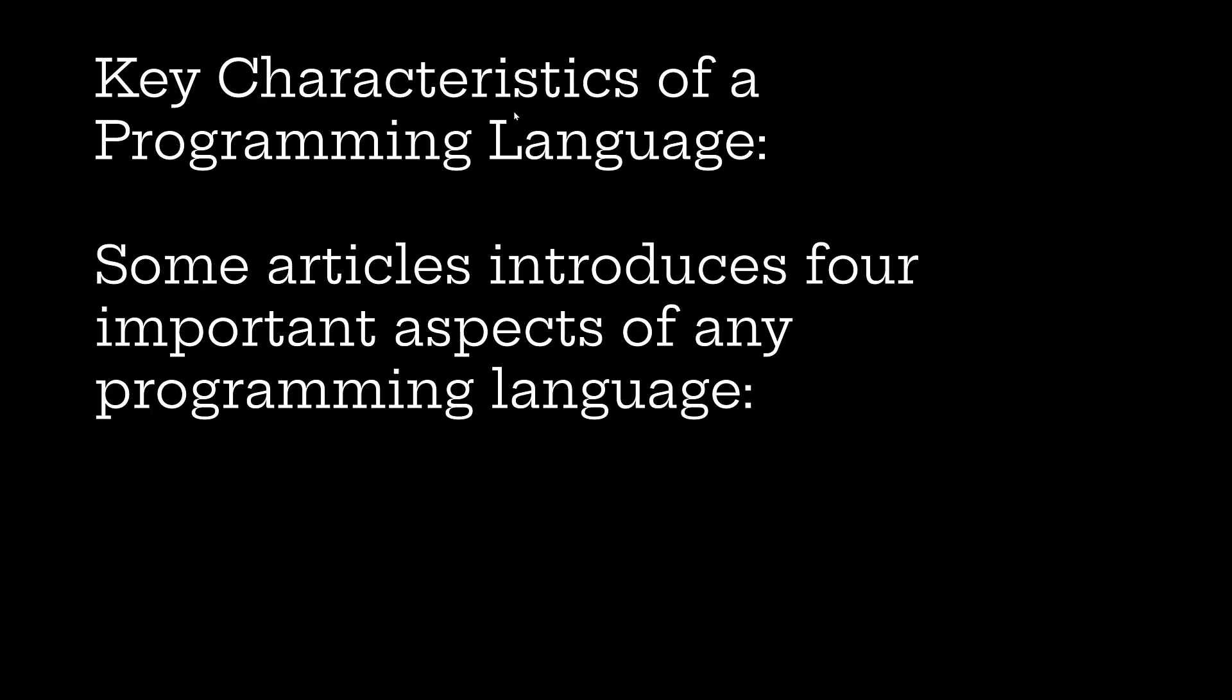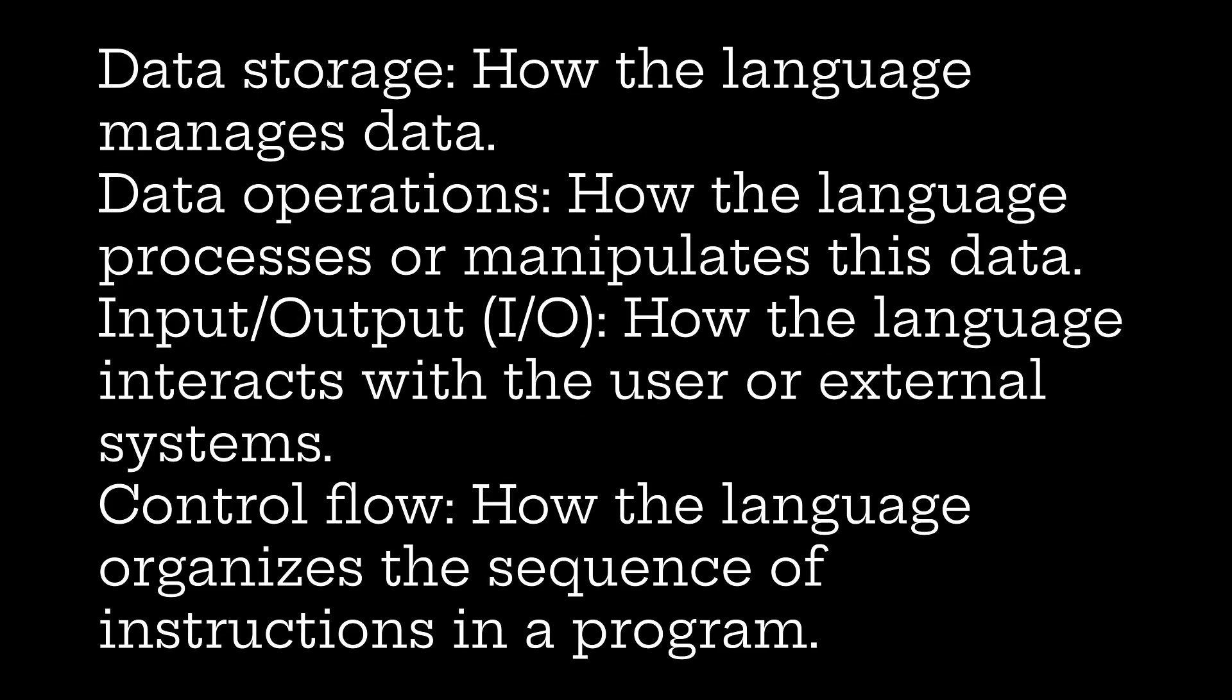Key characteristics of a programming language. Normally if you want to know about a programming language, it should have key characteristics. Some articles introduce four important aspects of any programming language. If any language wants to become a programming language, it needs to follow these four important aspects.